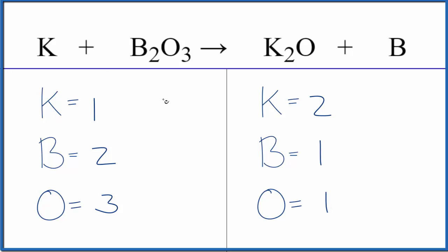So in this equation, because potassium and boron are by themselves, let's leave those to last because they'll be easy to fix. That won't change anything else. Let's start with the oxygen. If we put a three here, one times three, that'll balance the oxygen atoms.